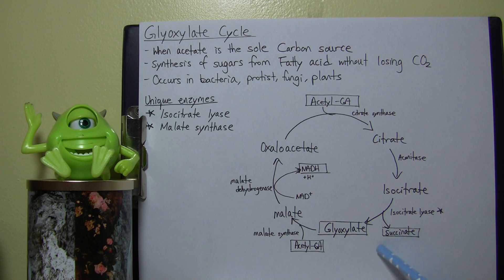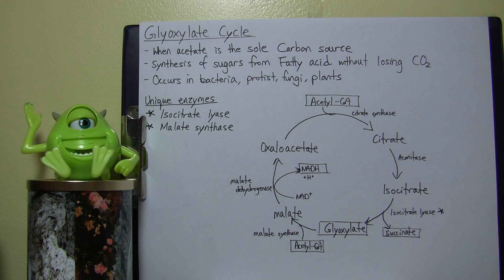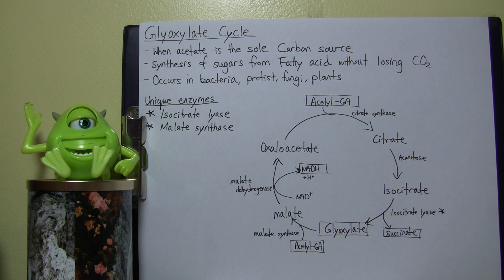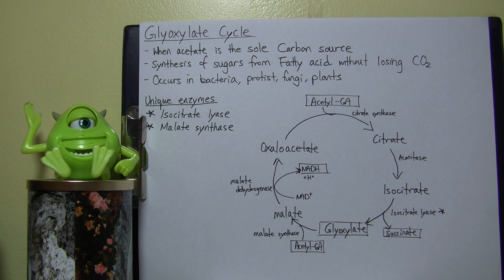The succinate produced can be used for anabolic reactions — for making sugars, amino acid production, and so on. So the glyoxylate cycle is very important for microorganisms, or any other organisms, living on acetate as the sole carbon source.